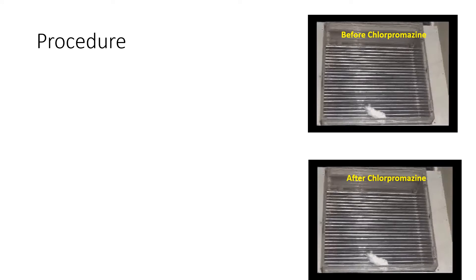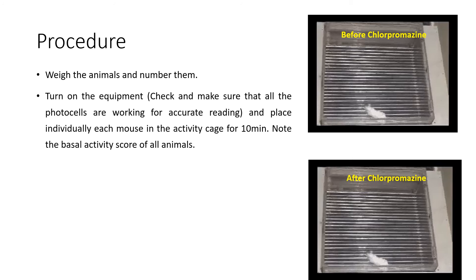For the procedure: weigh the animals and number them, then turn on the actophotometer and make sure that all the photocells are working for accurate reading. Then place each mouse individually in the activity cage for 10 minutes and note the basal activity score for all animals.